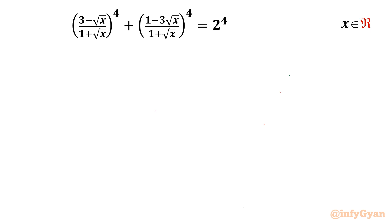Welcome back to Infigyan, my dear friends. In this video we are going to take up one very interesting and challenging question from radical rational equations. The given equation is (3 minus root x) over (1 plus root x) whole power 4, plus (1 minus 3 root x) over (1 plus root x) whole power 4, equal to 2 raised to the power 4. We have to find out the real values of x.